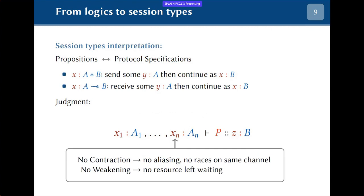Now we can understand what the restriction on contraction and weakening means behaviorally. No contraction corresponds to the fact that no aliasing can happen on the channels we use, which means there are no races on the same channel. The absence of weakening instead ensures that all channels will be used to completion, meaning no one providing those protocols will be left waiting.